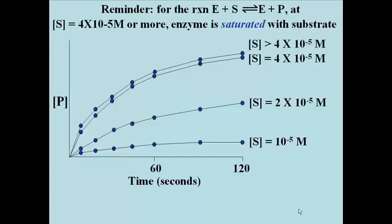We saw how to set up an experiment to measure enzyme kinetics, and then the curves shown here that describe the reaction rates for the conversion of substrate to product in the reaction E plus S goes to E plus P. We also saw that at concentrations greater than 4 times 10 to the minus 5th molar, the enzyme became saturated with substrate and the enzyme reaction could not proceed any faster.